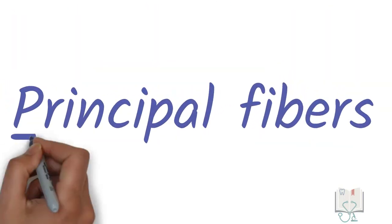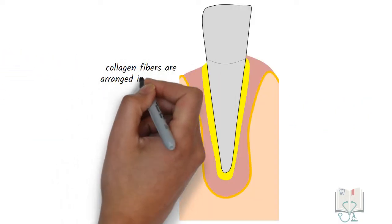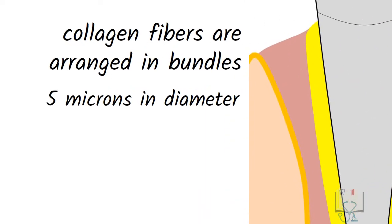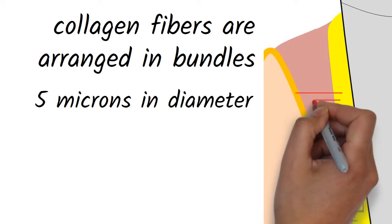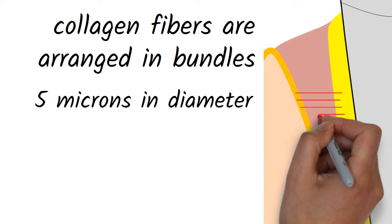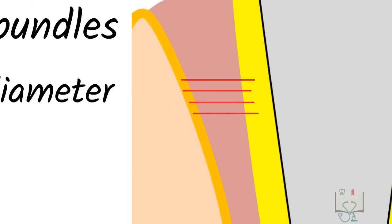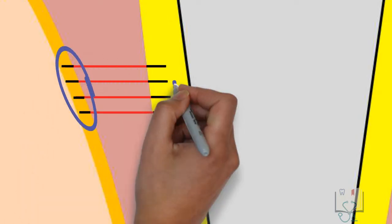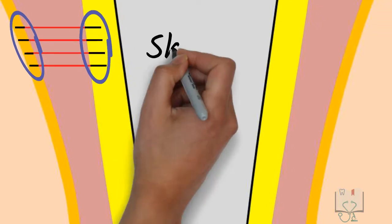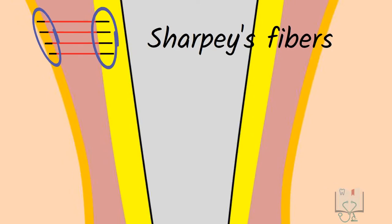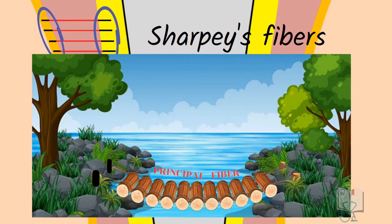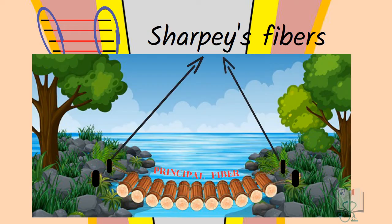Now coming to the principal fibers. They are the collagen fibers that are arranged in bundles, 5 microns in diameter, running from the cementum to the alveolar socket and play the main role in anchoring the tooth. The anchored part of these principal fibers at both ends, alveolar bone and cementum are called Sharpey's fibers. Like if a bridge is compared to a principal fiber, its anchored parts on both ends will be the Sharpey's fibers.